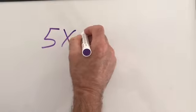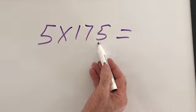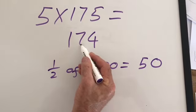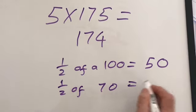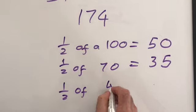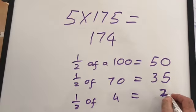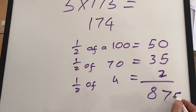5 times 175 equals. It's an odd number. I'll look at the previous even number. Now I can halve it. A half of 100 is 50. A half of 70 is 35. Half of 4 is 2. 87. I know that it's an odd number and I put a 5 on the end.